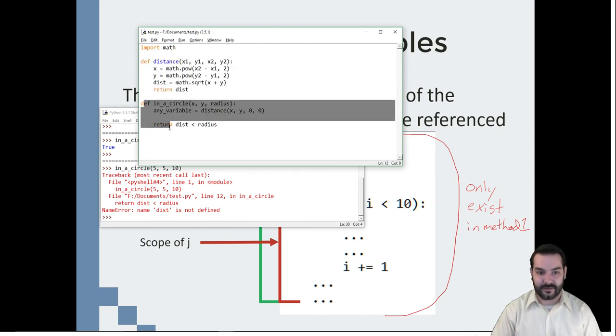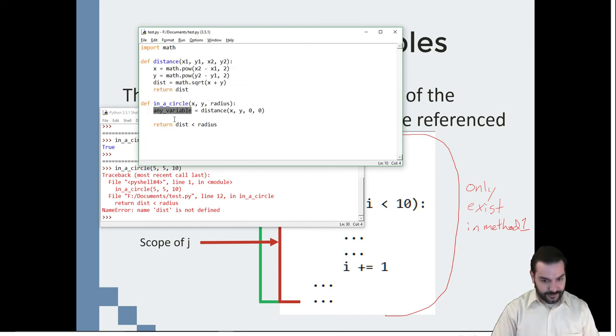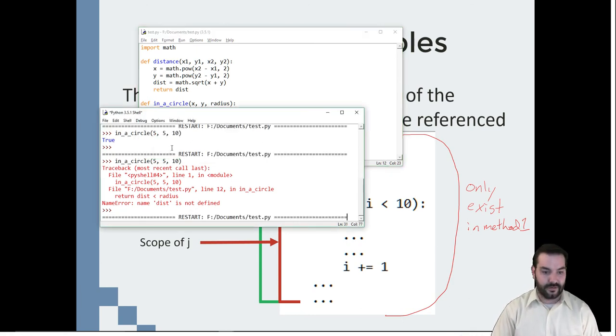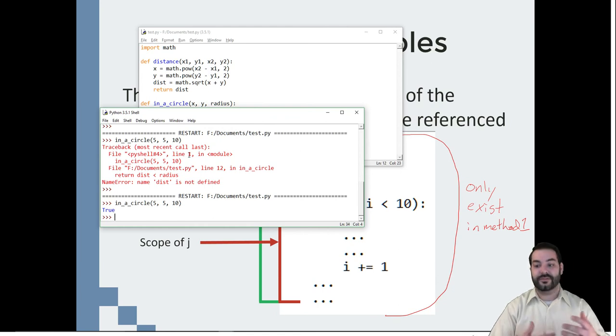It doesn't exist in circle. Circle is a completely different method entirely from distance. So now with this scope, I can sort of establish where a variable exists, where it belongs, and kind of its life cycle.